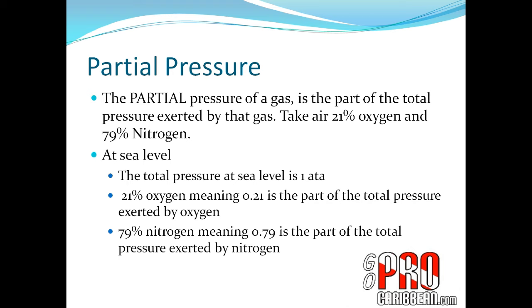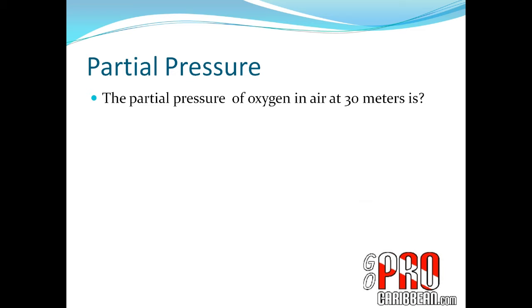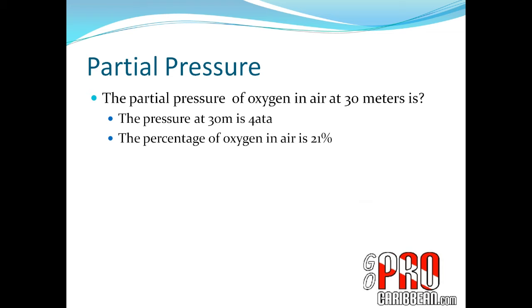79% nitrogen converts to a decimal of 0.79, so 0.79 atmospheres is the partial pressure of nitrogen in air at sea level. The partial pressure of oxygen in air at 30 meters: first we need the total pressure at 30 meters, which is 4 atmospheres. 21% oxygen, so 4 times 0.21 equals 0.84 atmospheres - that is the part of the total 4 atmospheres represented by oxygen.